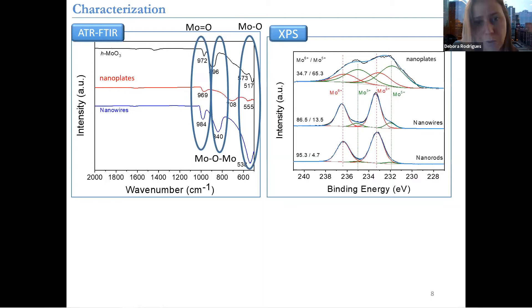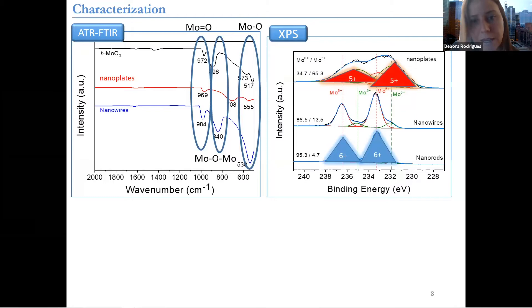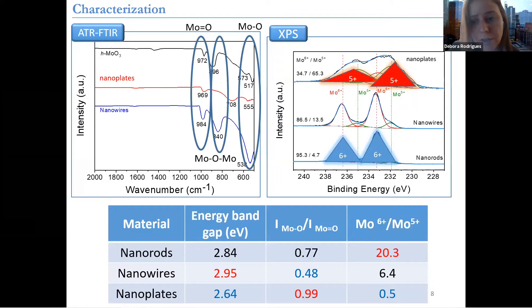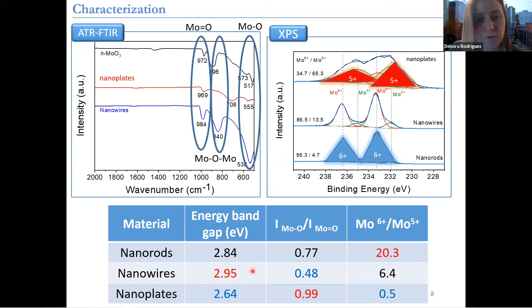And when we look at the XPS, we were more interested in looking at the oxidation state. We saw that the nanorods and the nanowires were in oxidation state +6, while the nanoplates were in oxidation state +5. When we look at the surface chemistry in more detail and do some comparison, we saw that they had very different properties — even the energy band gap, ranging from 2.6 to 2.95, and the ratio of bonds also changed quite a bit between the nanoplates, nanowires, and nanorods, as well as the ratio of oxidation state.